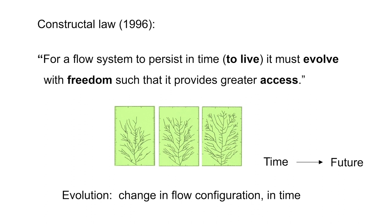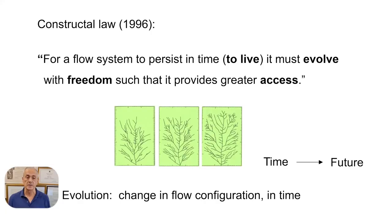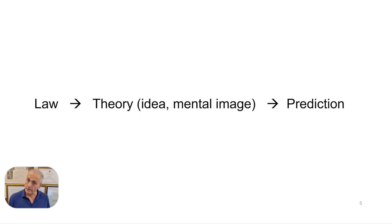I illustrated this with the three snapshot evolution of a river basin. The drawing is always arborescent, but from one frame to the next, the tree flows more easily. So, evolution is the change in flow configuration, change after change with directionality, directionality that makes sense to the observer.